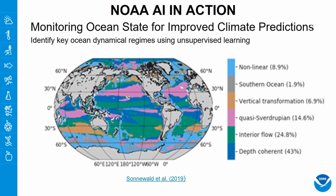My next slides share some applications for different types of data we collect in our agency. This one addresses the need for climate predictions and uses unsupervised learning to detect different regimes in model dynamics. It's a neural network that classifies regimes through training with surface data from a climate model or satellite observations, useful for assessing heat transport and predicting climate variation. There is more detail in the paper by Sonwali et al., 2019.